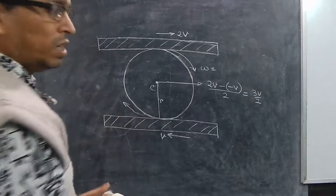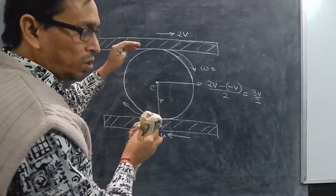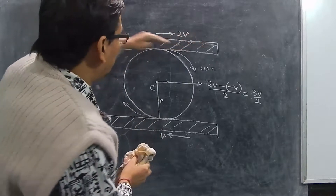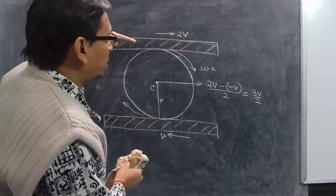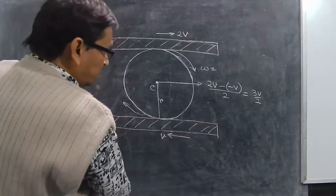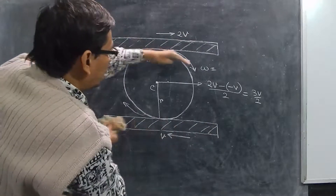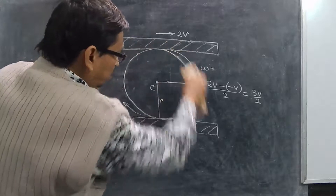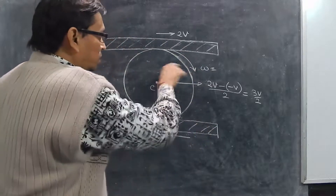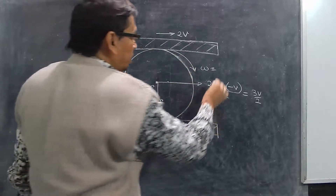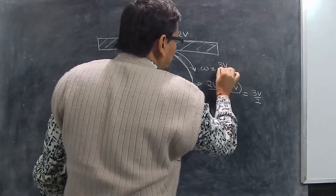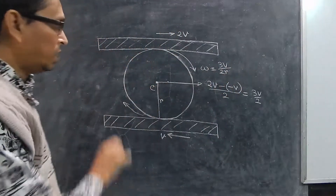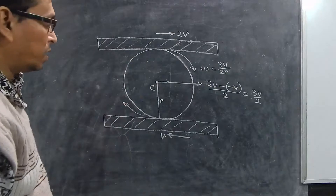Another way, you can apply common sense: this plank is giving a thrust in one direction and the other plank is giving a thrust in the opposite direction, so as a whole the thing will roll. The omega will be 3V by 2R — so this will be the omega of the cylinder.